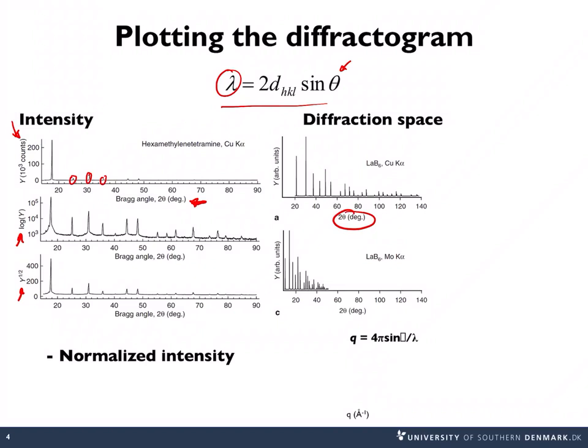We can see here where we change from a copper k-alpha to a molybdenum k-alpha. The pattern looks the same, but for the molybdenum data, which is a lower wavelength, the peaks are squished together at lower angles.